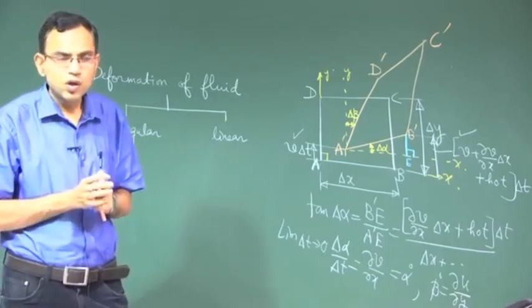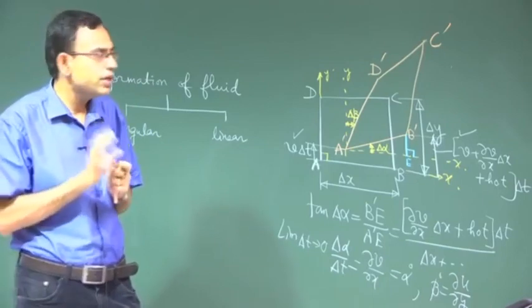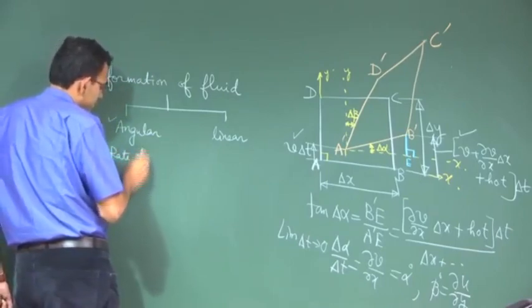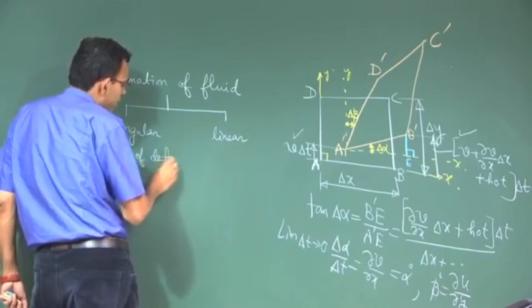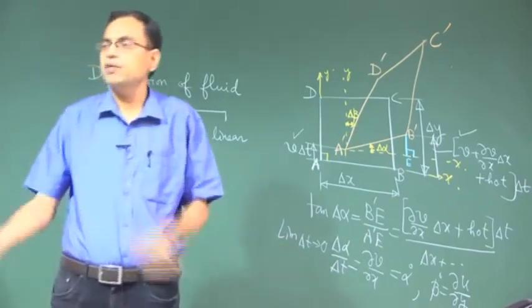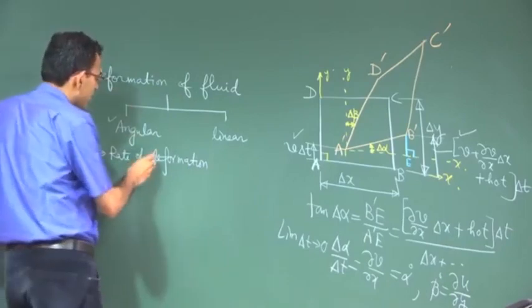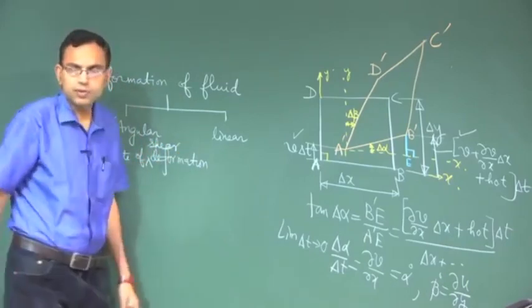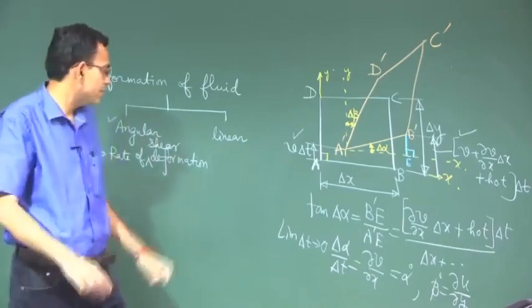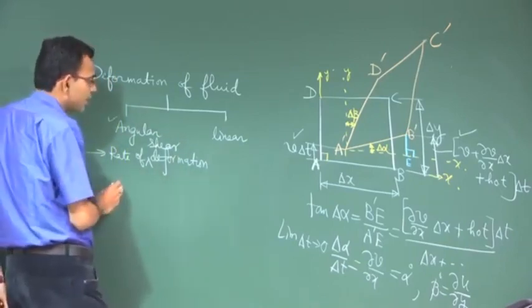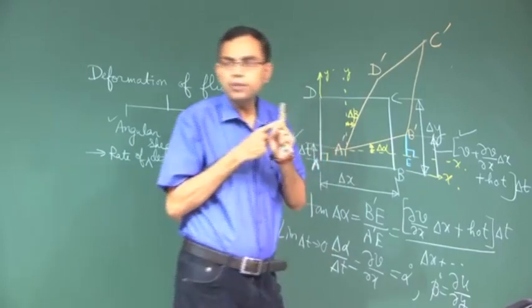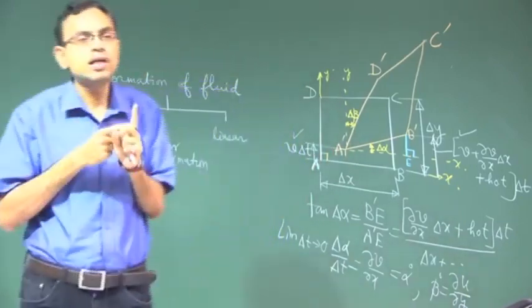Now the concept comes. Two important conceptual definitions: one is the rate of deformation. When we say rate of deformation, although deformation can be linear or angular, normally we are looking for rate of shear deformation. It is always better to describe it as rate of shear deformation, because you also can have rate of linear deformation or volumetric deformation. Rate of shear deformation is defined as the rate of change of the angle between two imaginary line elements that were originally perpendicular to each other.